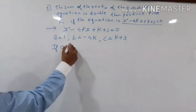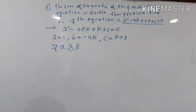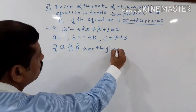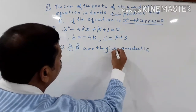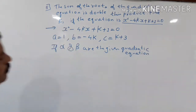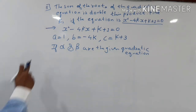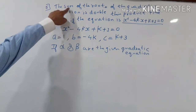Let alpha and beta be the roots of the given quadratic equation. The sum of the roots is alpha plus beta, and the product of the roots is alpha times beta.